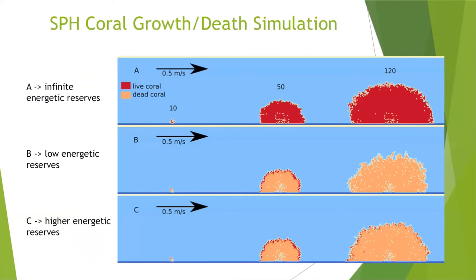Another thing we did was to model growth based on energetic reserves. In the first model we didn't have a death rule, so the coral would grow infinitely until it covered the whole domain, which is a bit unrealistic. Then we introduced the concept of energetic reserves. We can see that when initialized low, eventually it will lead to coral mortality. When we initialize with some higher values, it works as expected — we have some particles that are live and deposited on top of a dead coral framework.